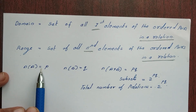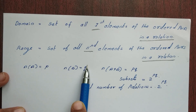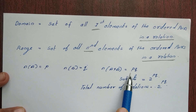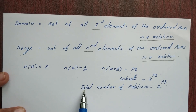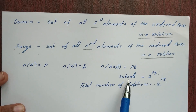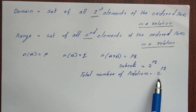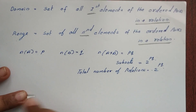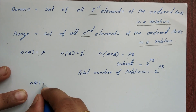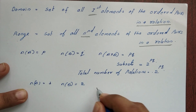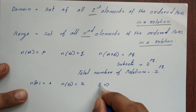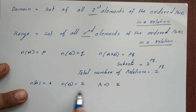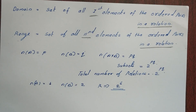Set A has P elements, Set B has Q elements, A cross B has P×Q elements. For example, if A has 3 elements and B has 2 elements, then A cross B has 6 elements, and the total number of relations is 2 raised to 6, which equals 64 relations possible.